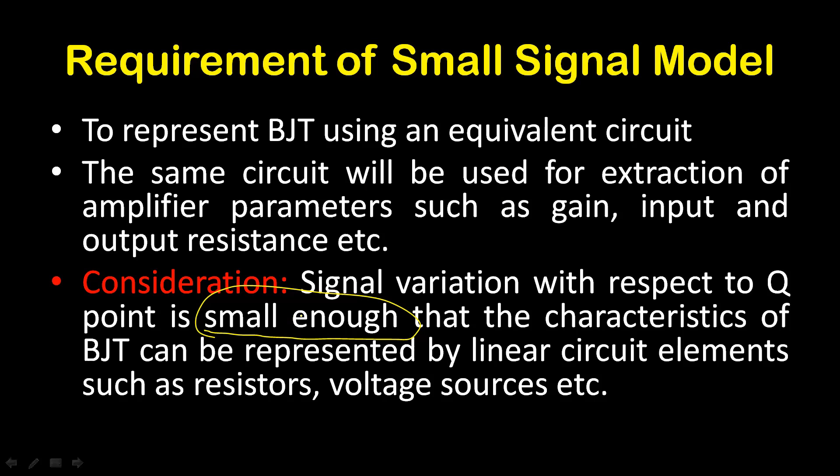To design one amplifier, the first step is to select or fix the Q-point, and you know the desired position of the Q-point is the mid-position of the load line. After setting the Q-point, you can apply the small signal AC input to the amplifier. If the variation of the signal with respect to the Q-point is small, then you can assume that the characteristics of the BJT are linear for that range of variation, and you can replace the BJT using some linear circuit elements.